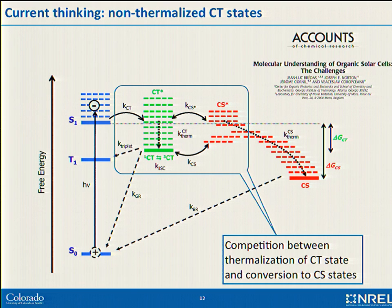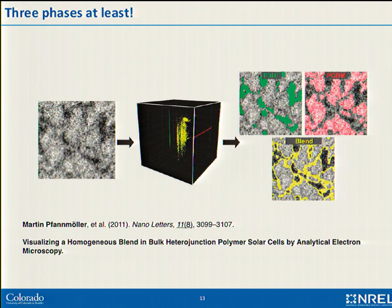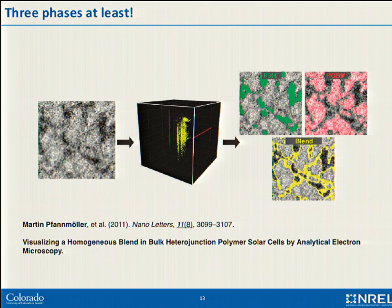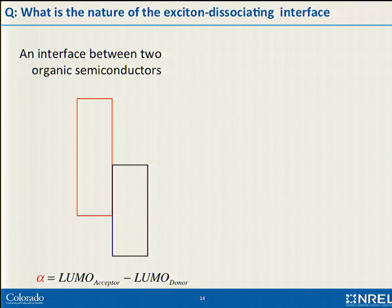This next diagram from the literature shows how naive the original picture was — a nice fullerene domain and a nice polymer domain. What actually happens when you look, it's a little bit messy. This paper from Martin Van Moeller, who did some electron microscopy, shows the system is comprised of polymer phases, pure fullerene phases, but also some mixed phase — three phases at absolute minimum. So where are the charges generated, and how does this actually happen?